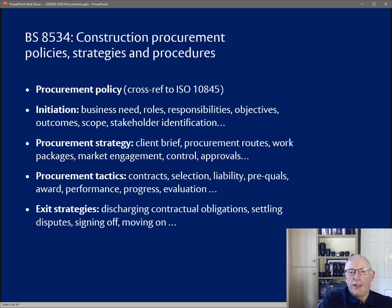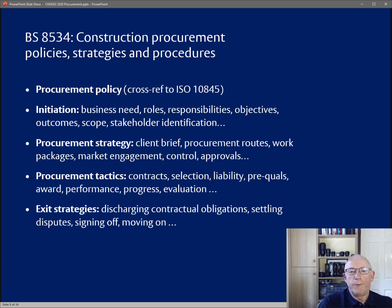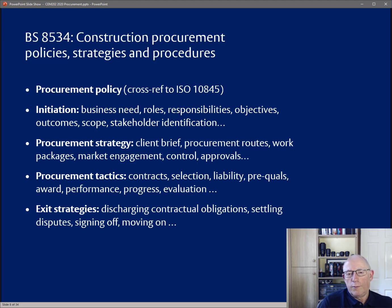British Standard 8534 is focused on initiation — thinking about what the business need is, what roles and responsibilities are needed to achieve the objectives of the project, who the stakeholders are, and so forth. It then moves through procurement strategy: how the client brief is developed, what procurement routes to use in terms of the main roles of the parties, and how to engage with the market. Then procurement tactics cover contract selection, liability, pre-qualifications, award of contract, monitoring progress, and evaluating construction work at its completion.